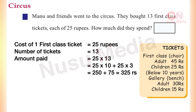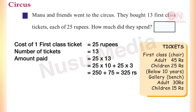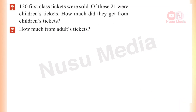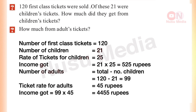How much did they get from children's tickets? How much from adults' tickets? There are a number of first class tickets — 21 tickets. The number of first class tickets is 21. The rate of the ticket is 25 rupees. The cost is 21 into 25, which is 525 rupees.